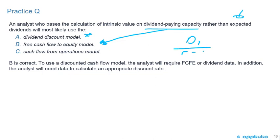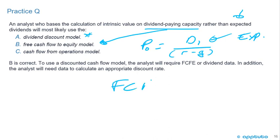When we're looking at expected dividends, that's the dividend discount model — for example, P₀ = D₁ / (k − g) in the Gordon Growth Model. The word 'capacity' is key. B is correct. The free cash flow to equity model reflects the capacity to pay, while the dividend discount model uses the expected dividend. That's the last slide for this LOS.